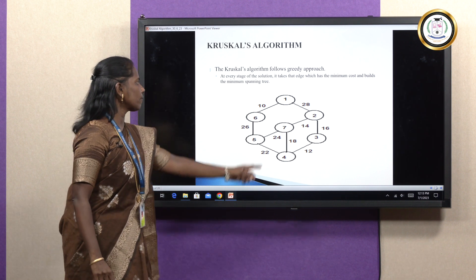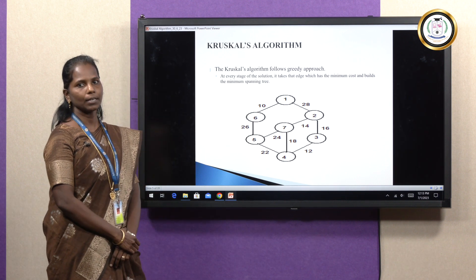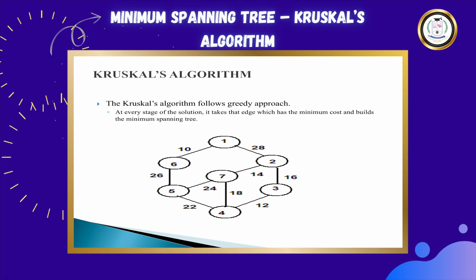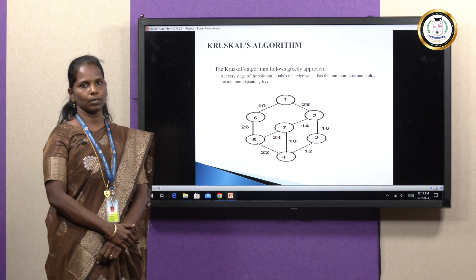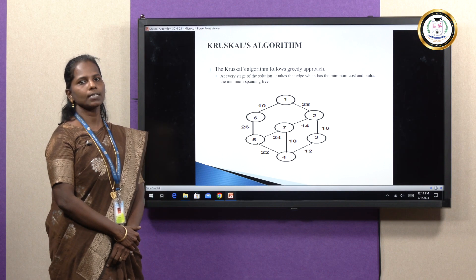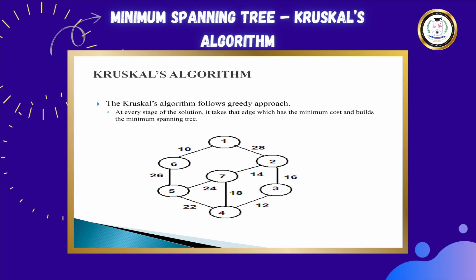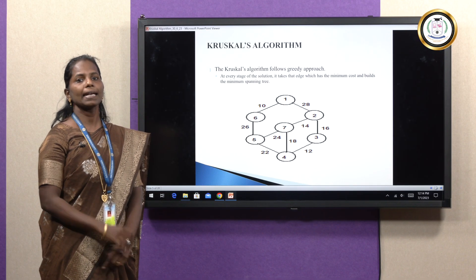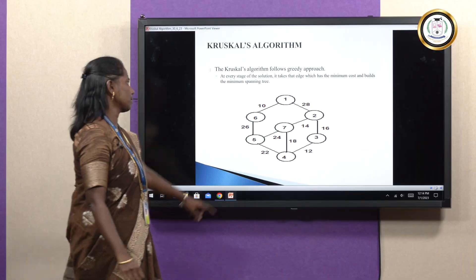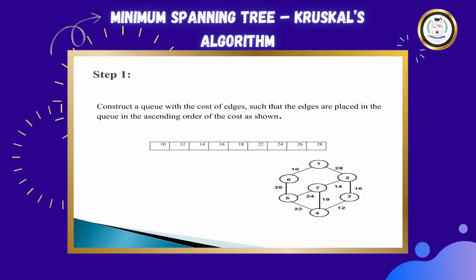Here we are having a graph, which can be called a network. A graph is called a network when the edges have some values — those values can be distance or cost. Now I am going to construct a minimum spanning tree for this graph using Kruskal's algorithm. Kruskal's algorithm uses a greedy approach. Greedy approach means at every stage it tries to find out the minimum cost edge and build the minimum spanning tree.